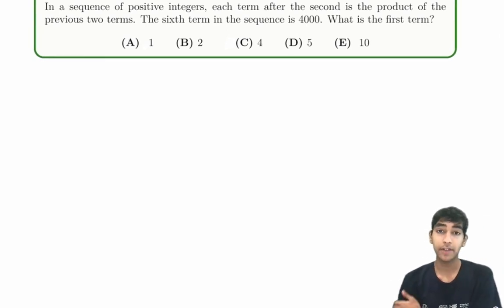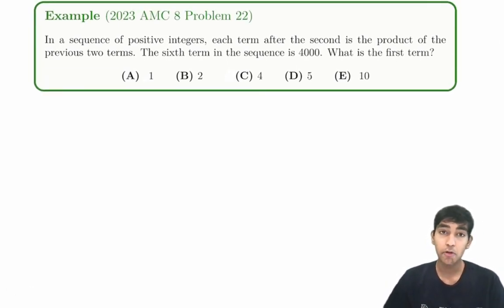In a sequence of positive integers, each term after the second is the product of the previous two terms. The sixth term in the sequence is 4,000. What is the fourth term?